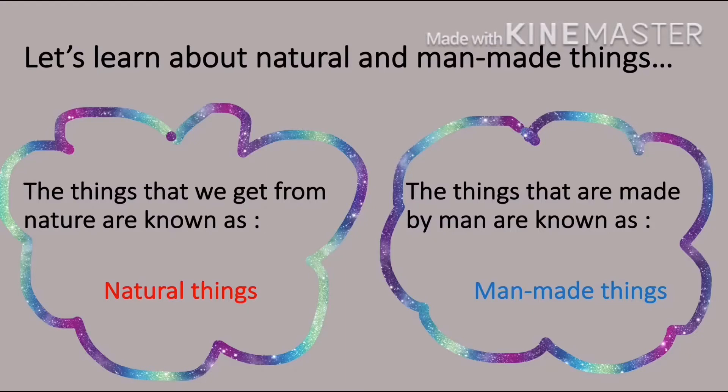Let's learn about natural and man-made things. The things that we get from nature are known as natural things, and the things that are made by man are known as man-made things. Let's see a few pictures ahead to understand better.